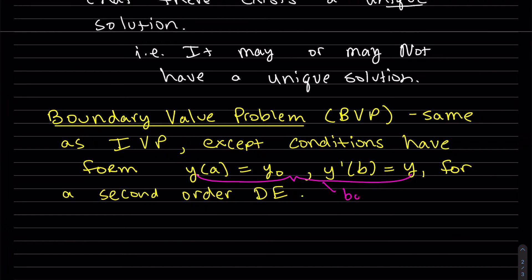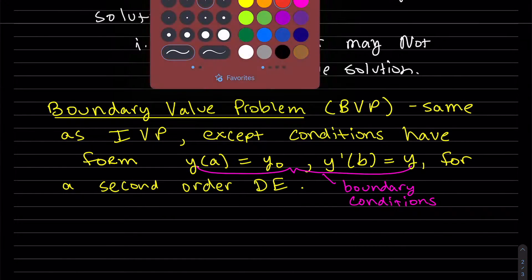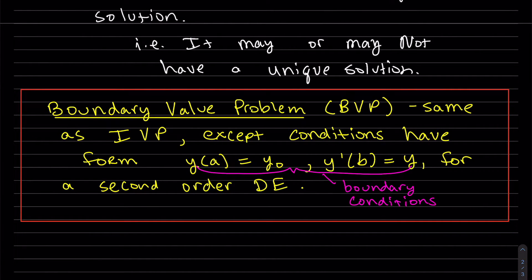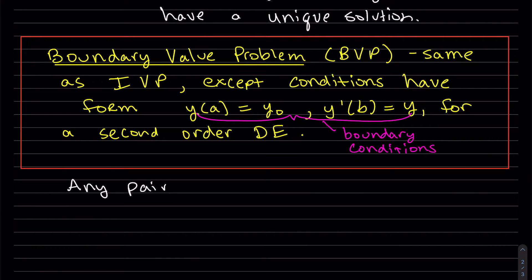These are my boundary conditions. So for a boundary value problem, it's pretty much the same DE as the initial value problem, except the conditions have a different form. They basically can have different values for your x value. And those are my two boundary conditions for my second order DE.